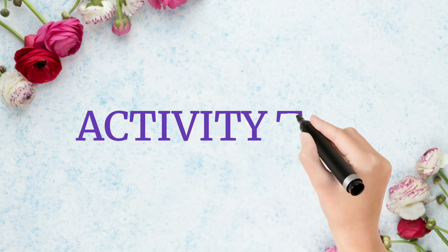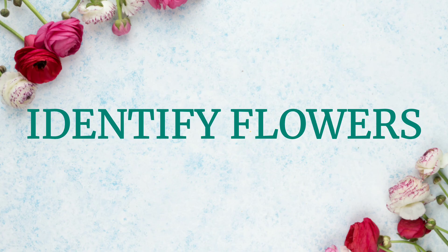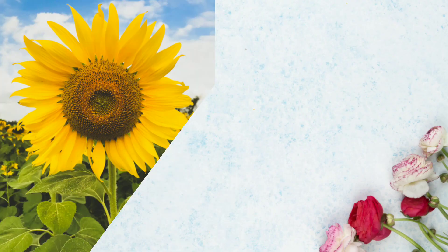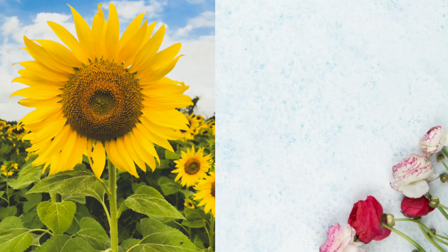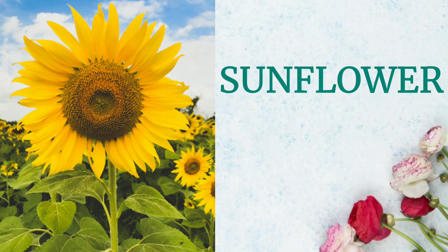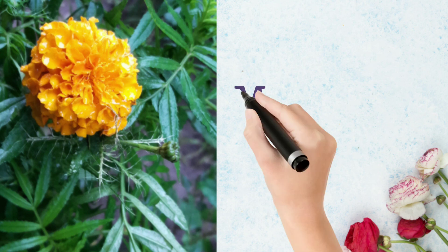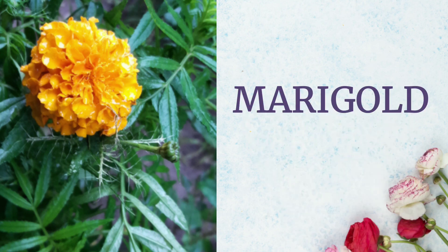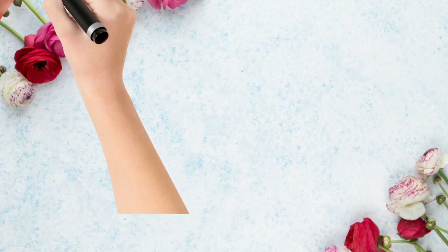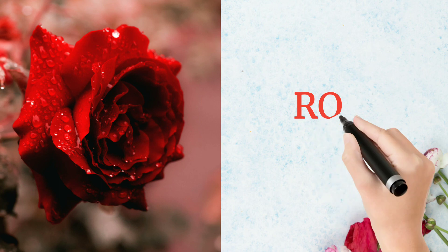Now it's activity time — identify the flowers. Here we go with the first flower: sunflower. Correct, it's sunflower! Next one is marigold. Correct, it's marigold! And next is rose. Very good, nice — it's rose!